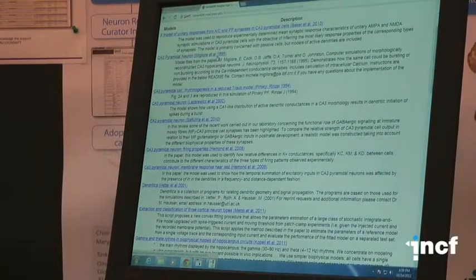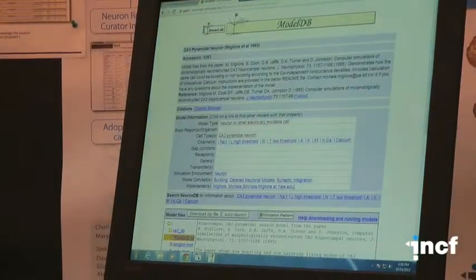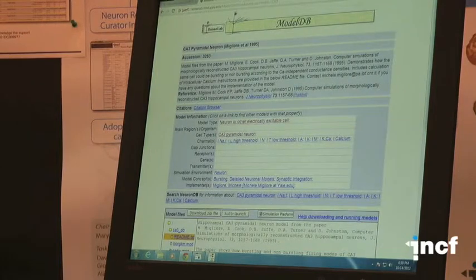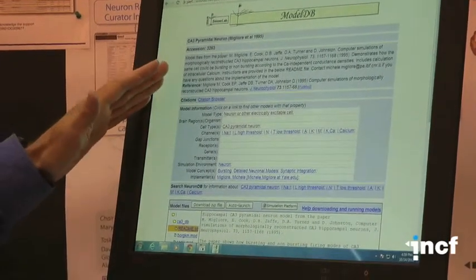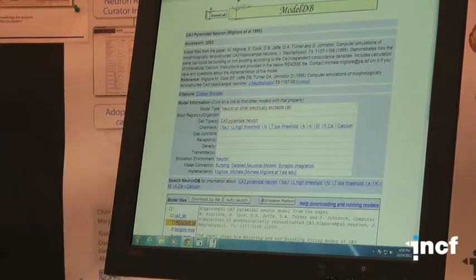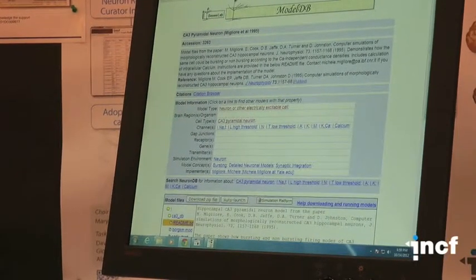You can click on the model name and go to the show model page, which then shows the name of the model, a very short summary of the model, and the reference the model is associated with.